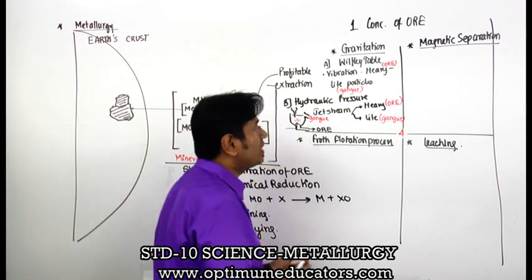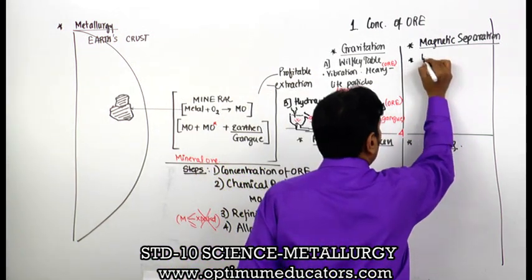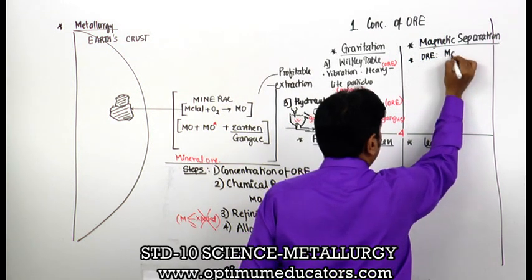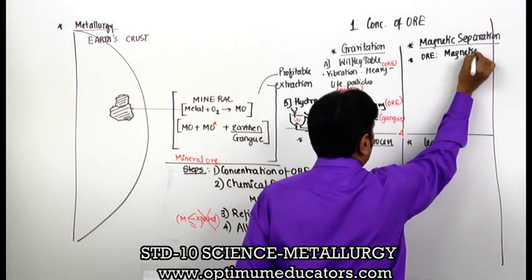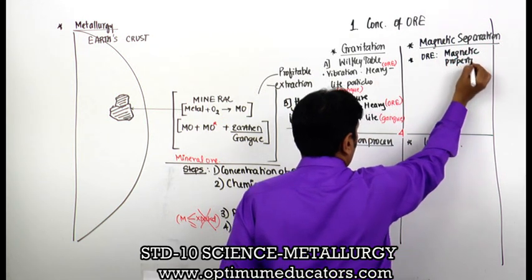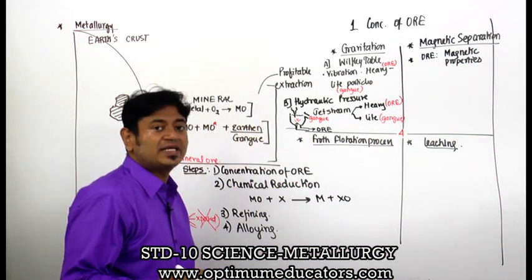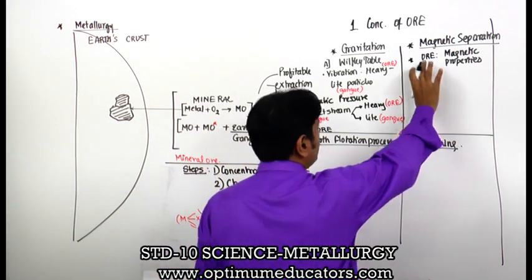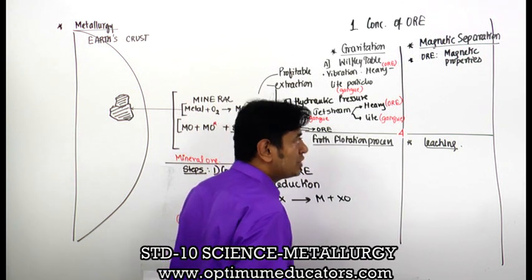Now let us talk about magnetic separation. In magnetic separation, the ore should have some magnetic properties. Only that particular substance which exhibits magnetic properties can be concentrated by using magnetic separation.